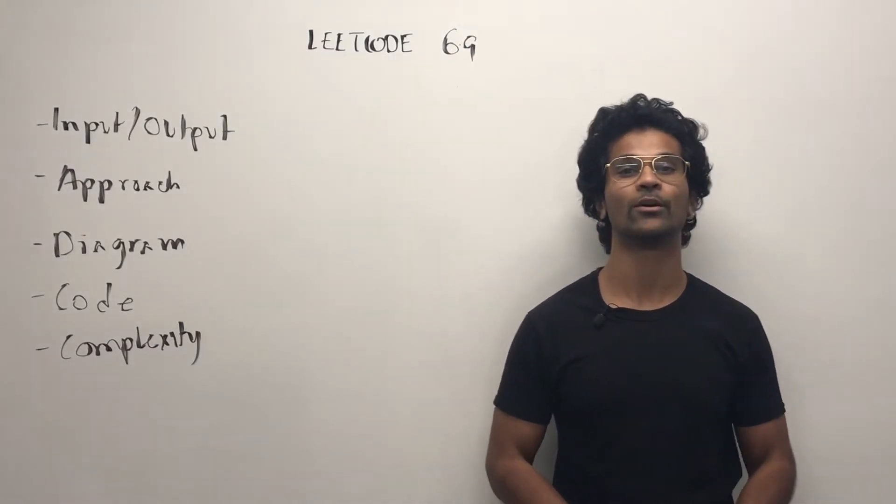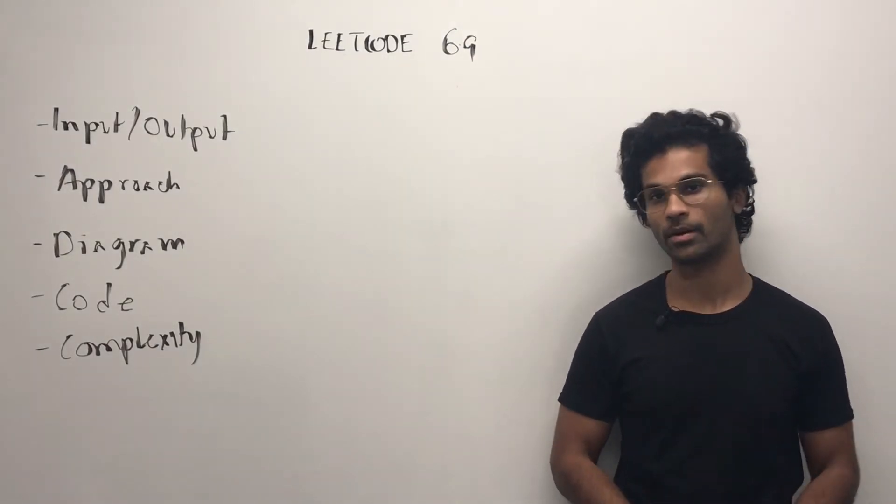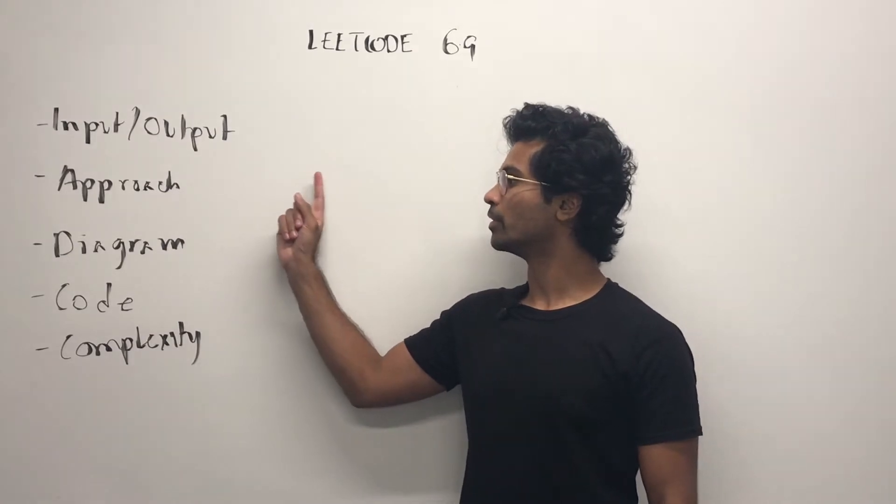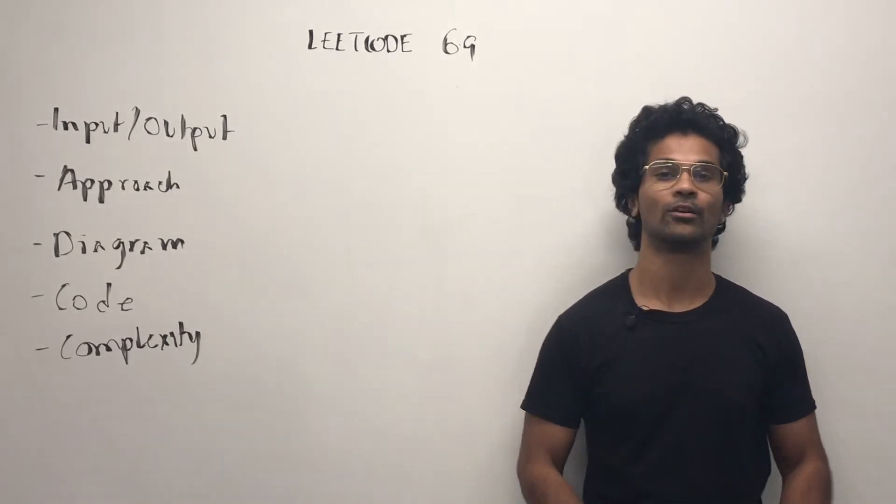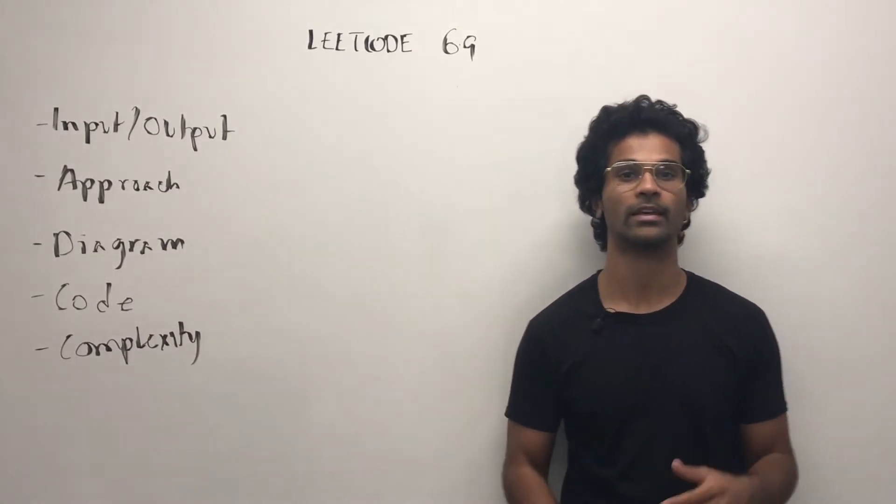What's up everyone? Today we're going to go over LeetCode 69, square root of a number. First we'll go over the input-output, then we'll look at the approach, then I'll draw a diagram, and finally we'll look at the code and complexity.